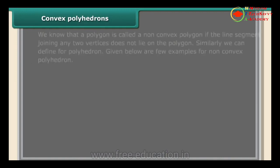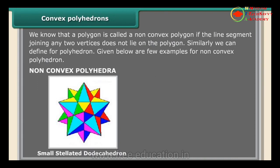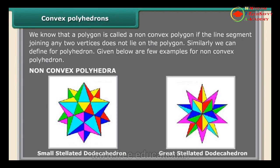A polyhedron is called a non-convex polyhedron if the line segment joining any two vertices does not lie entirely on or inside the polygon. Examples of non-convex polyhedra include the small stellated dodecahedron, great stellated dodecahedron, great icosahedron, and great dodecahedron.